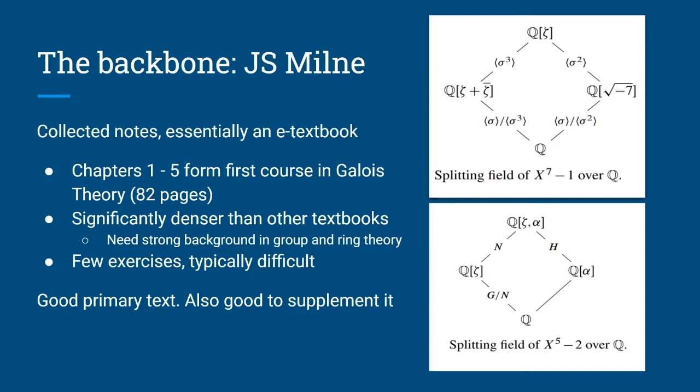The backbone of the course that I did was J.S. Milne's online textbook. I did chapters one through five, which essentially form a first course in Galois theory. This is significantly denser and more terse than other textbooks, and expects more from the reader, so you will need a strong background in group and ring theory — in other words, abstract algebra — to read it successfully. There aren't too many exercises, and they are typically difficult, so it's a good idea to supplement Milne with sources that have more practice.